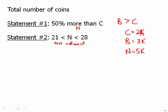But of course now we see the magic. If we put the two statements together, it has to be a multiple of five, has to be between 21 and 28. Well, the only multiple of five in that region is N equals 25. Together they must have 25 coins.